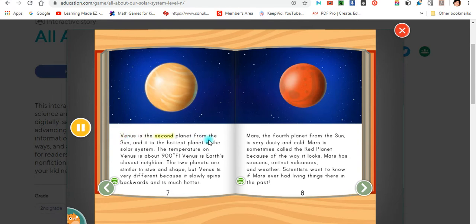Venus is the second planet from the sun, and it is the hottest planet in the solar system. The temperature on Venus is about 900 degrees Fahrenheit. Venus is Earth's closest neighbor. The two planets are similar in size and shape, but Venus is very different because it slowly spins backwards and is much hotter.